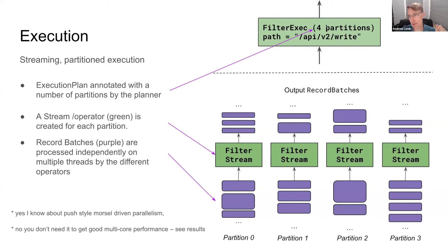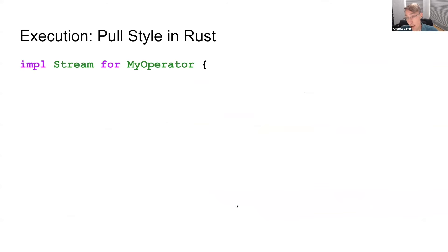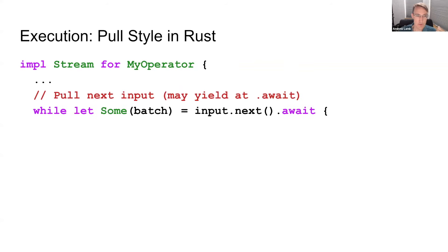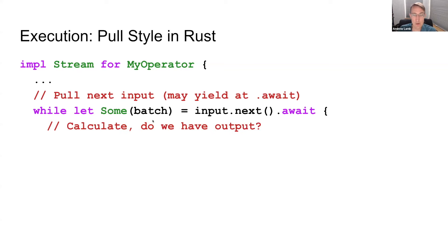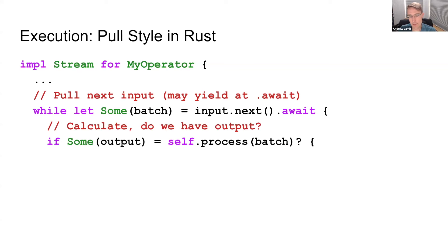The four partitions means the plan's parallelism is specified at planning time and can't really adjust at runtime. The green things are called streams, the purple ones are called record batches. To implement a pull-based system, each operator must incrementally consume some input and produce some output. In Rust with Tokyo, you write a loop: while you still have input, call `next().await` to pull the next batch — maybe 4,000 or 8,000 rows — do your processing, and if you have output you return the record batch to the caller.